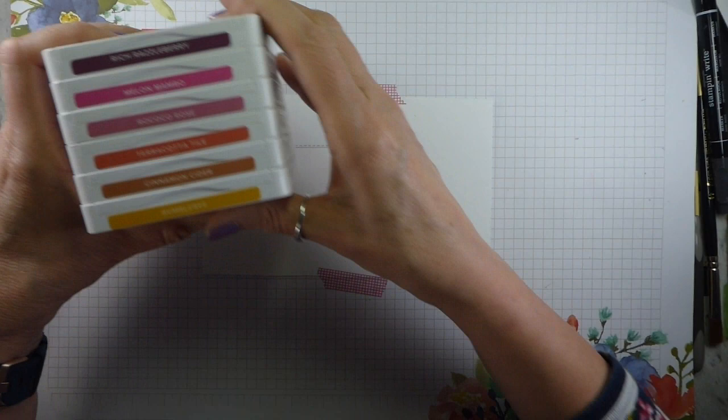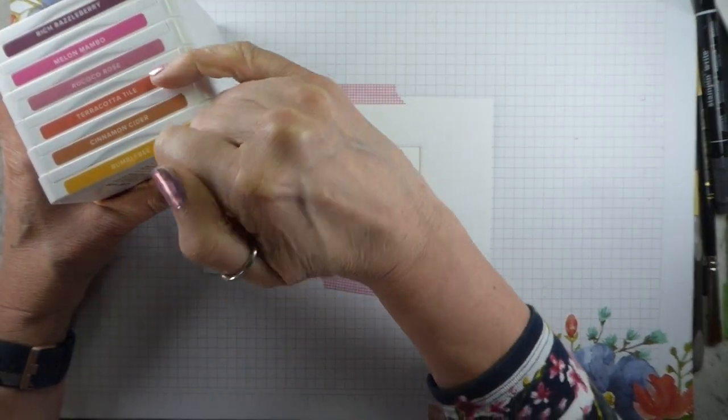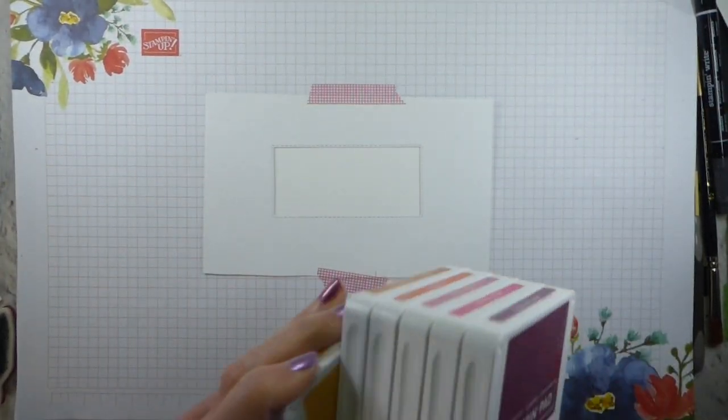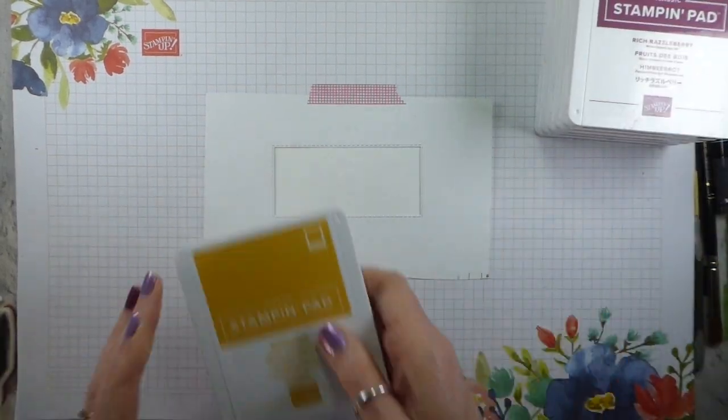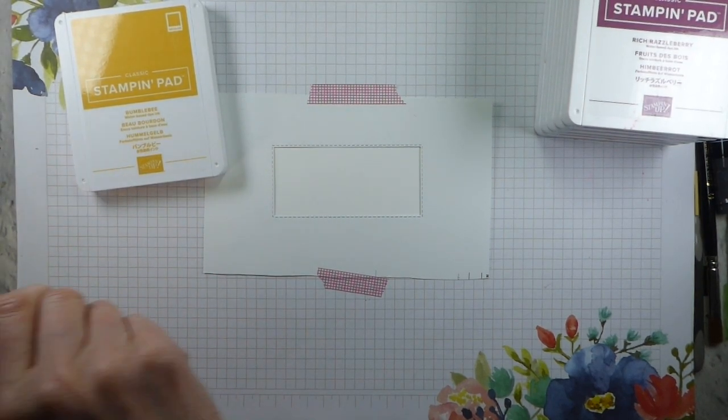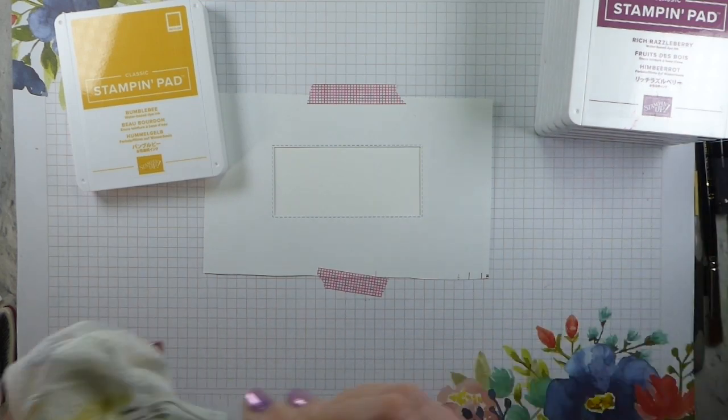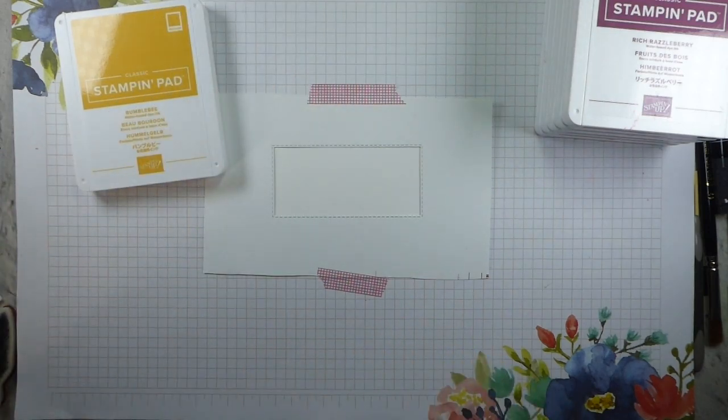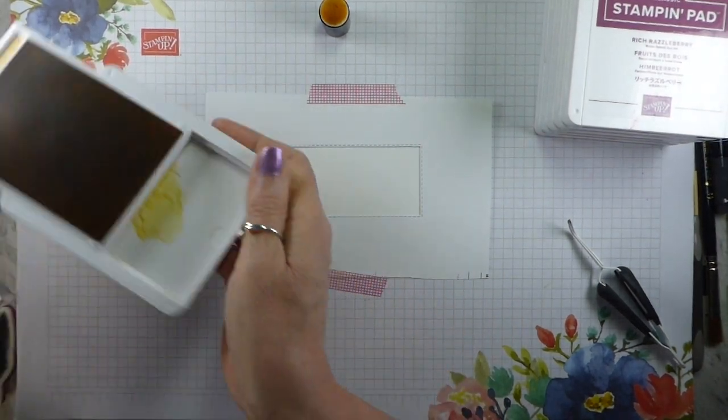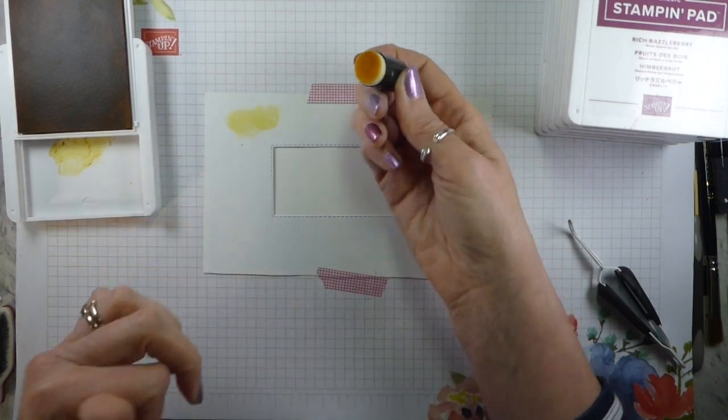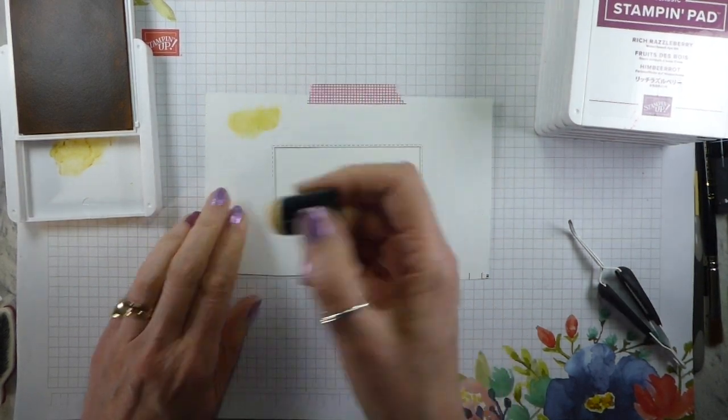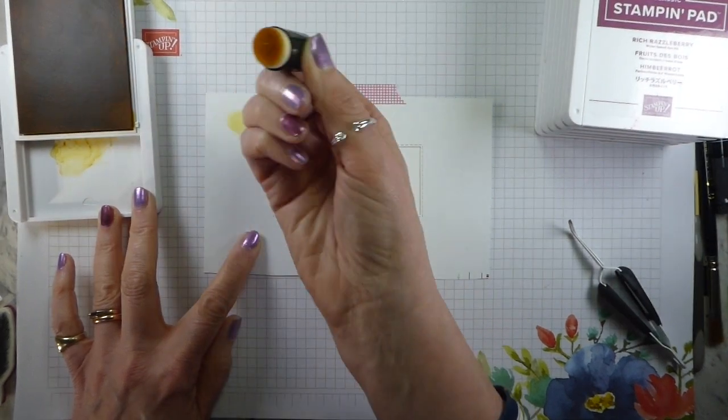My color palette this time is Bumblebee, Cinnamon Cider, Terracotta Tile, Rococo Rose, Melon Mambo, and Rich Razzleberry. I'm going to start from left to right and I will be doing it as a horizontal rather than a vertical. The first thing I need is my Bumblebee Sponge Dauber and my tweezers so that I don't end up getting ink all over myself. Now, the first thing I'm going to check is whether it needs any more glycerin.